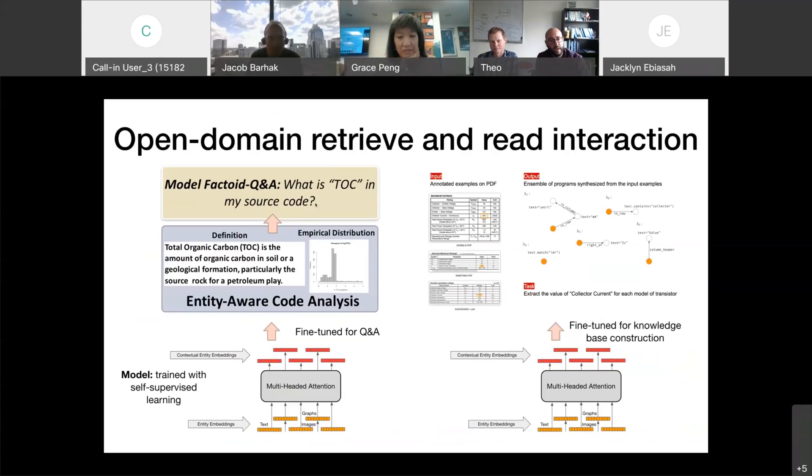For instance, we can start with our pre-trained model that consolidates all the context for different entities and fine-tune it to be able to answer factoid questions. For instance, what is total organic carbon in my source code? These types of questions can allow users, as I will show you later in the demo, not only to extract definitions of these scientific quantities from the literature, but also extract observational data so that they can build empirical distributions over these scientific quantities.